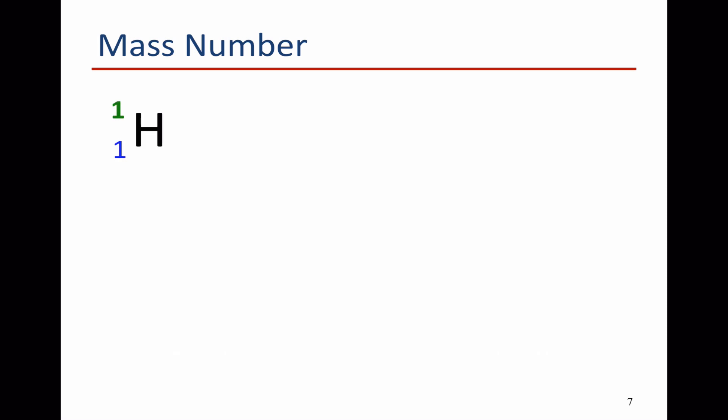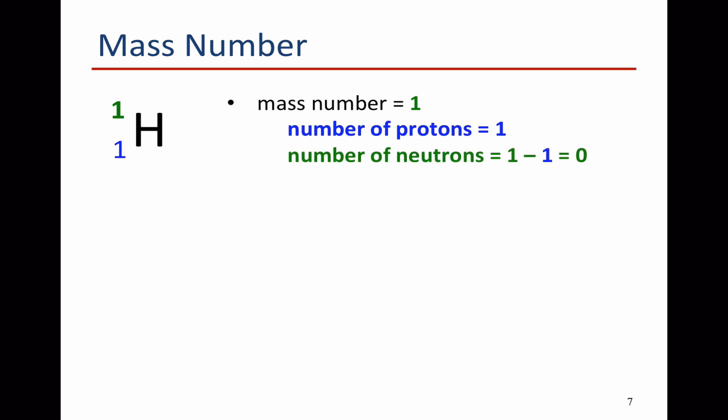Here's our atomic symbol for hydrogen with a 1 as a superscript. It's got a mass number of 1. But we've already worked out that it's only got 1 proton, which means the number of neutrons is the mass number minus the number of protons — 1 minus 1 — no neutrons.